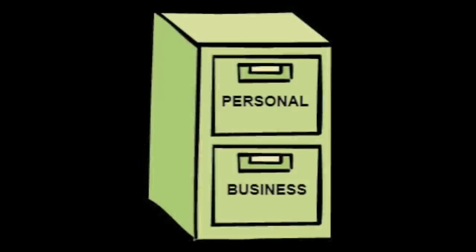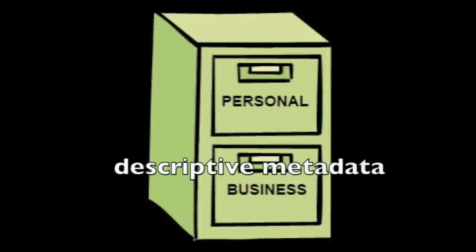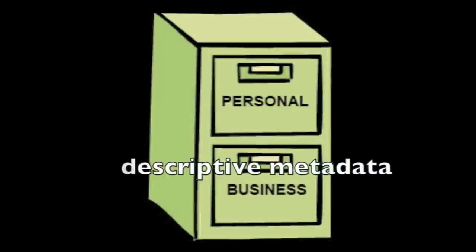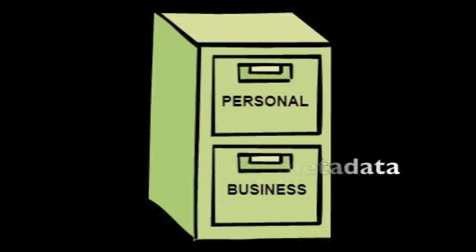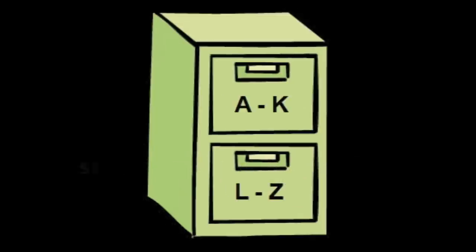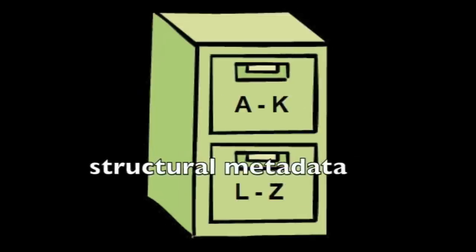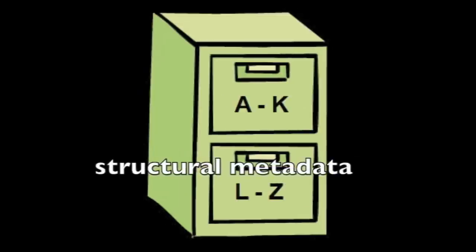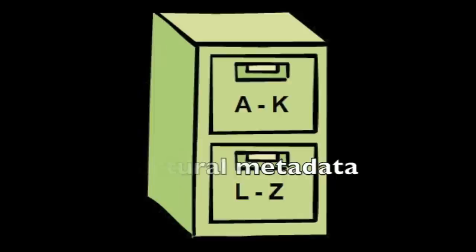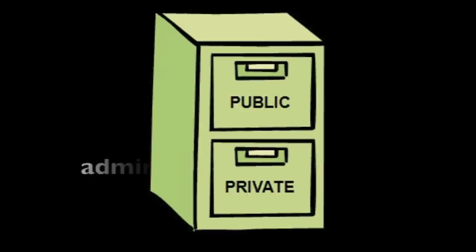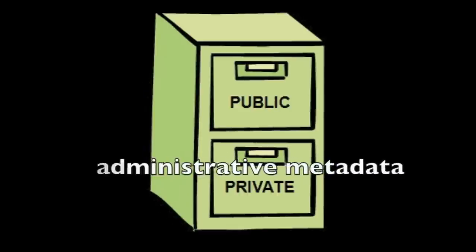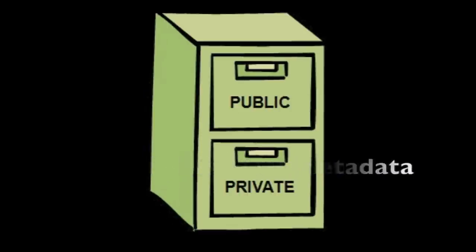The labels on a filing cabinet may have any of the three types of metadata. They may be descriptive and indicate whether a drawer contains business or personal papers. They may be structural and indicate that the top drawer has folders A through K while the bottom drawer has L through Z. They may also be administrative and indicate which drawers are private.